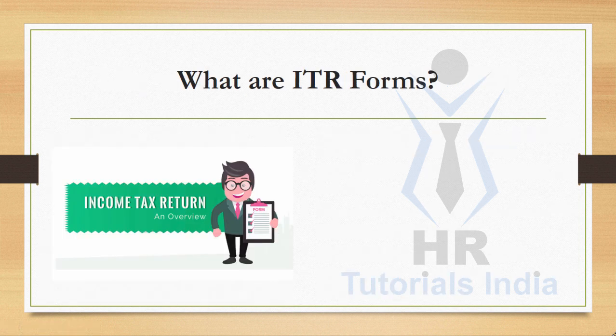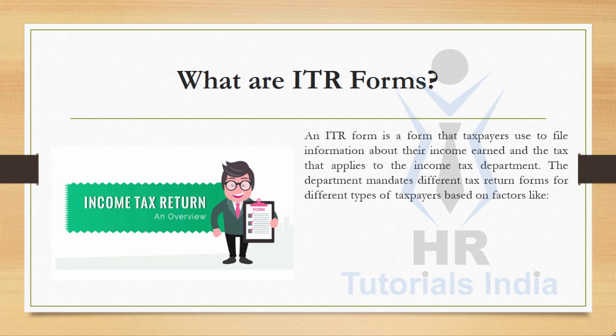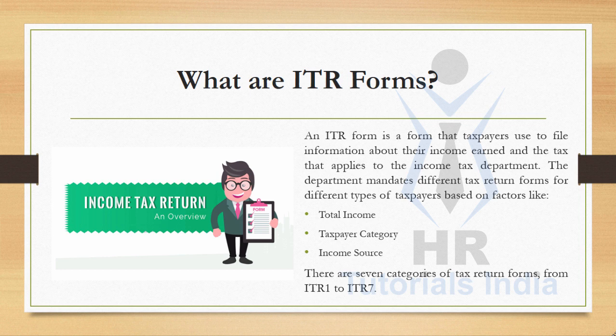What are ITR forms? An ITR form is a form that taxpayers use to file information about their income earned and the tax that applies to the income tax department. The department mandates different tax return forms for different types of taxpayers based on factors like total income, taxpayer category, and income source. There are seven categories of tax return forms, from ITR 1 to ITR 7.